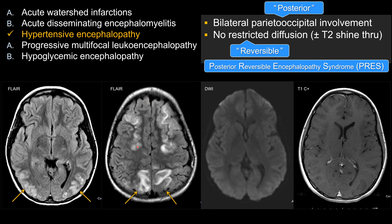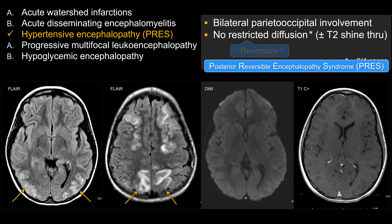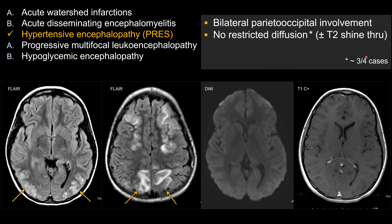However, as seen in this case and many cases of PRES, this is somewhat of a misnomer. You can see anterior distribution as well, so PRES may not always involve only the posterior region. Also, up to about 75% of the time you see no restricted diffusion, meaning 25% of the time there is restricted diffusion — the process is no longer reversible, and the patient may have progressed to infarction with a permanent neurologic deficit. So PRES is a slight misnomer: it's not always posterior, and it's not always reversible.